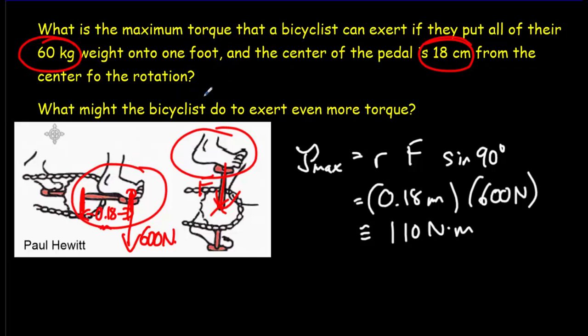And finally, what might the bicyclists do in order to exert more torque? Well, one thing they could do is increase the lever arm distance here and have longer pedals. Might also talk about the gears and changing the radius of those gears to exert different amounts of torques. You might also talk about how a person could grip the frame of the bicycle and push down with their muscles and thereby exert a bigger force than their own weight.